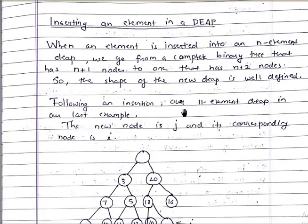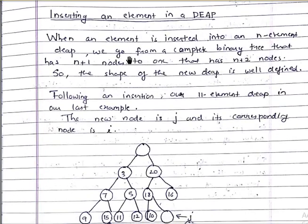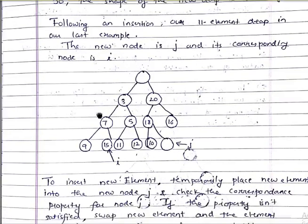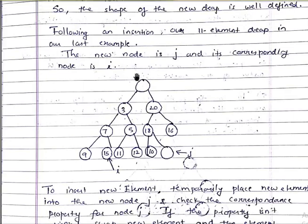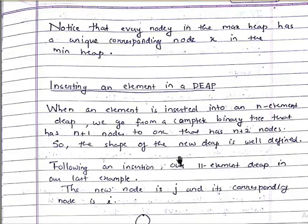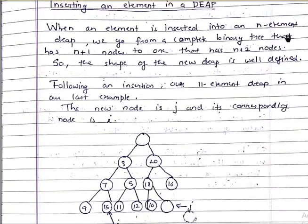Now let's look at inserting an element into a DEAP. When an element is inserted, we go from a complete binary tree with n+1 nodes to one with n+2 nodes. The shape of the new DEAP is well defined. This is our 11-element DEAP — the root is empty, the left side is the min-heap, and the right side is the max-heap.